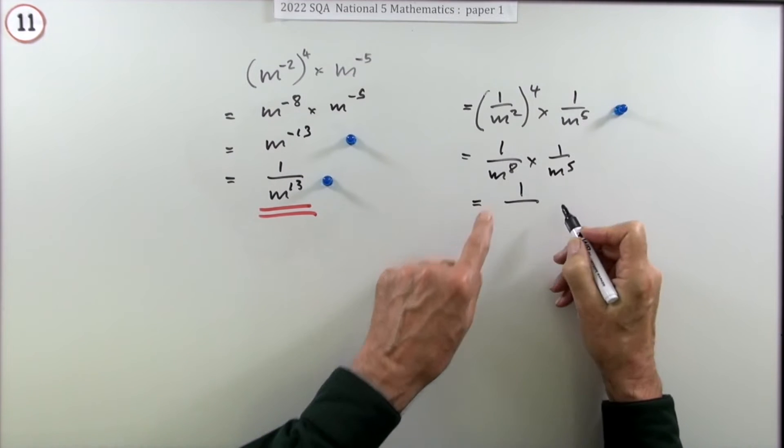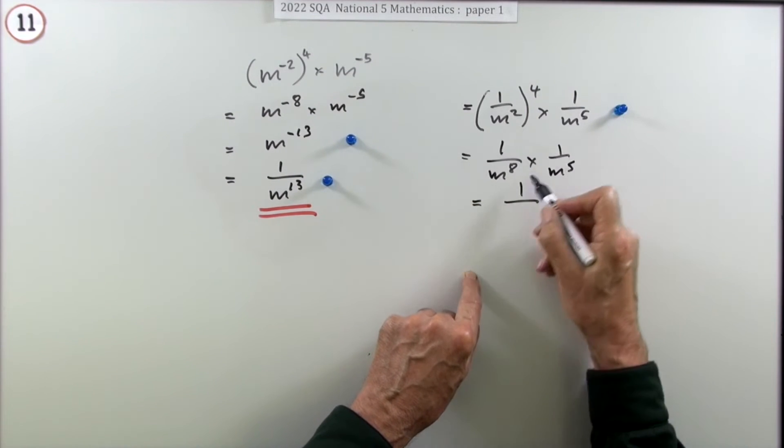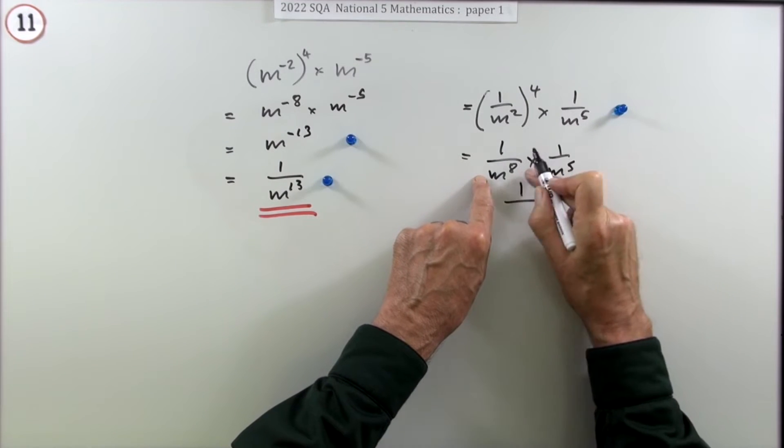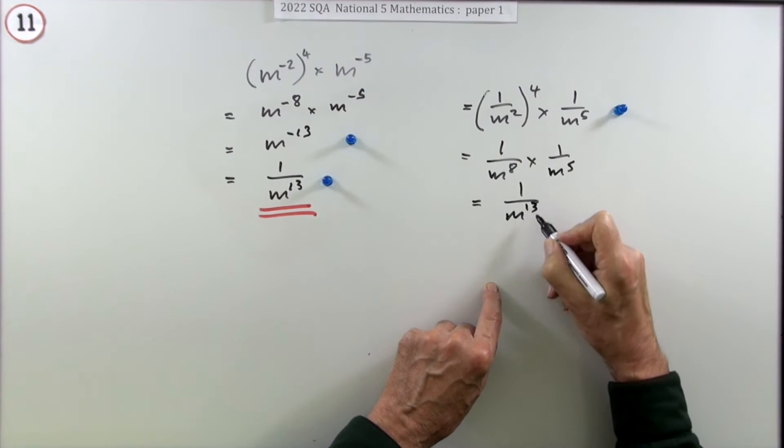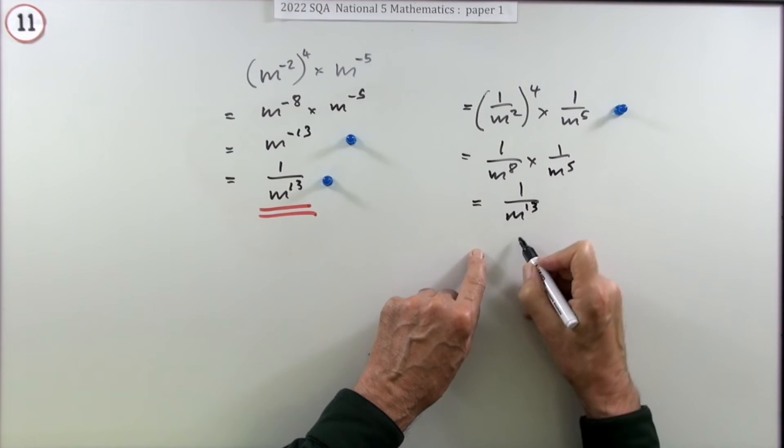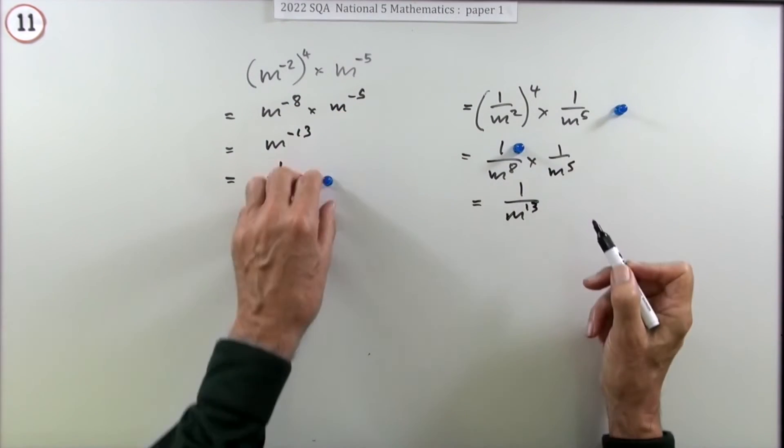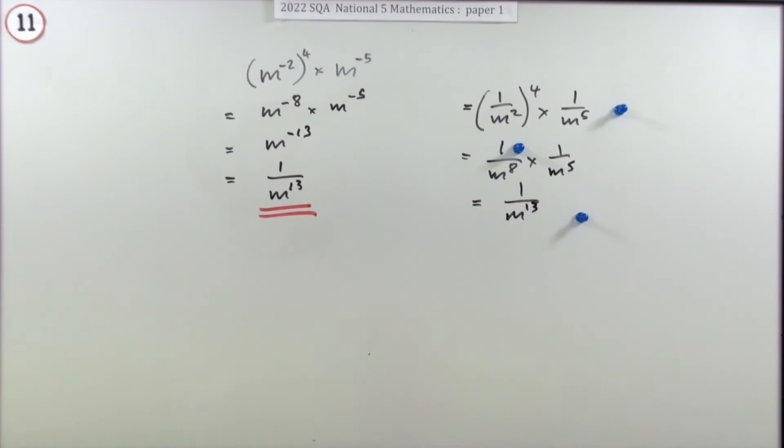And then multiplying them, you'd multiply the numerators 1 times 1, multiply the denominators m to the 8 times m to the 5. You add the powers because you'll have multiplied in the denominator 13 times altogether. So one mark for carrying out the power of a power and one mark for carrying out the multiplying two terms with powers.